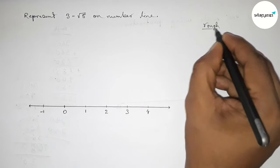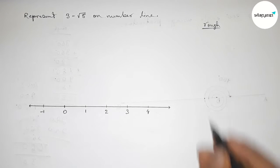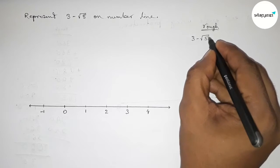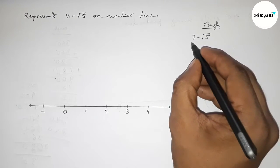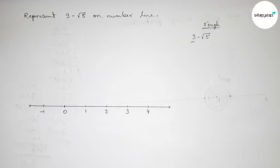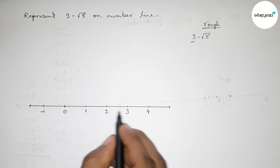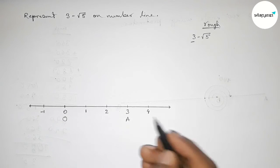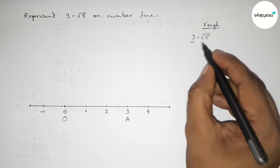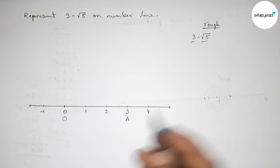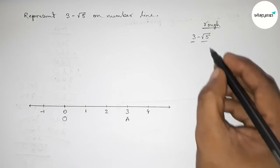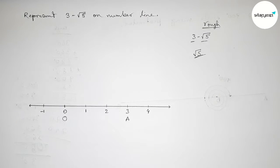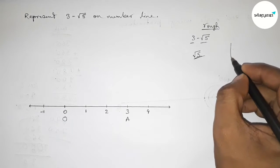Now roughly discussing some important calculation. We have to represent 3 minus root 5. For the value 3, from 0 to 3 this is a total 3 unit length. Now we have to subtract root 5, so first let's roughly calculate root 5.